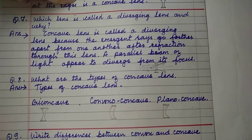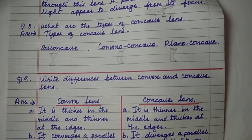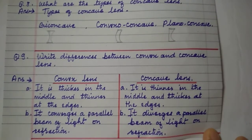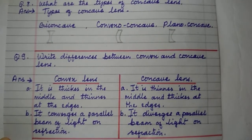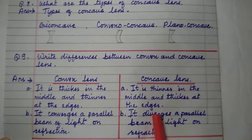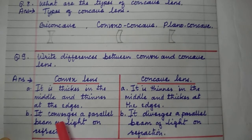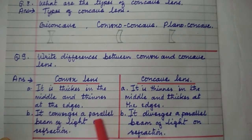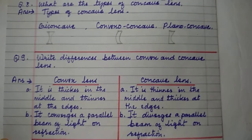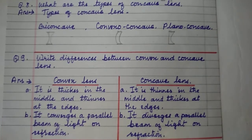Write the differences between convex and concave lens. Convex lens is thicker in the middle and thinner at the edges, whereas concave lens is thinner in the middle and thicker at the edges. Convex lens converges a parallel beam of light on refraction, whereas concave lens diverges a parallel beam of light on refraction.